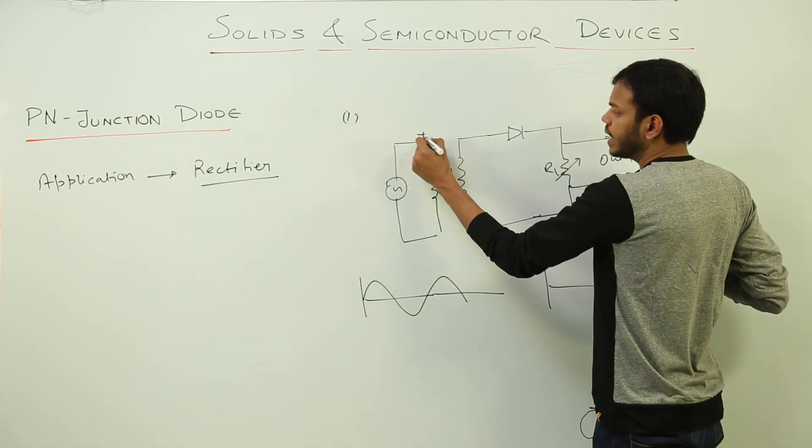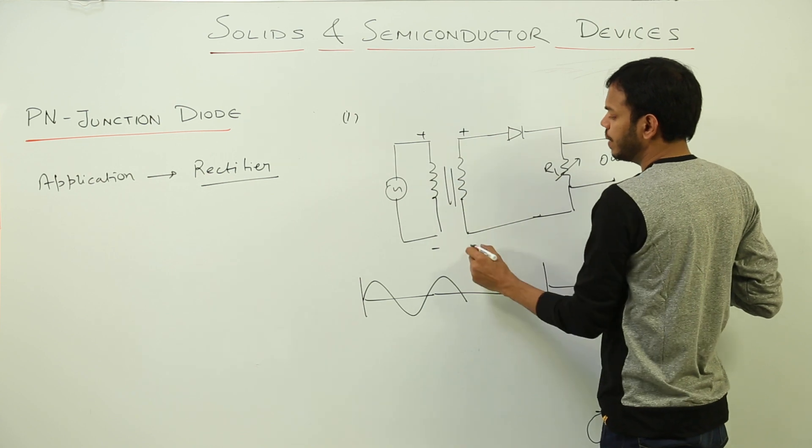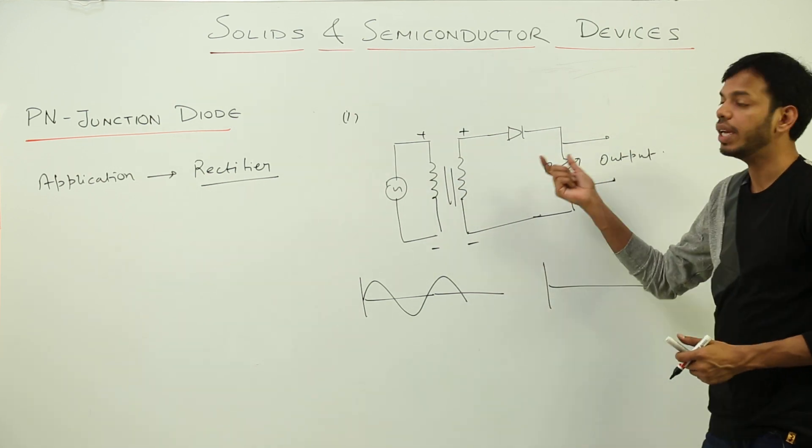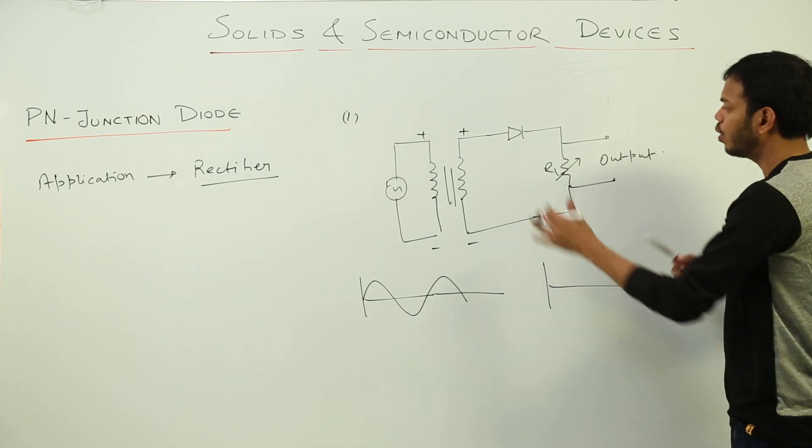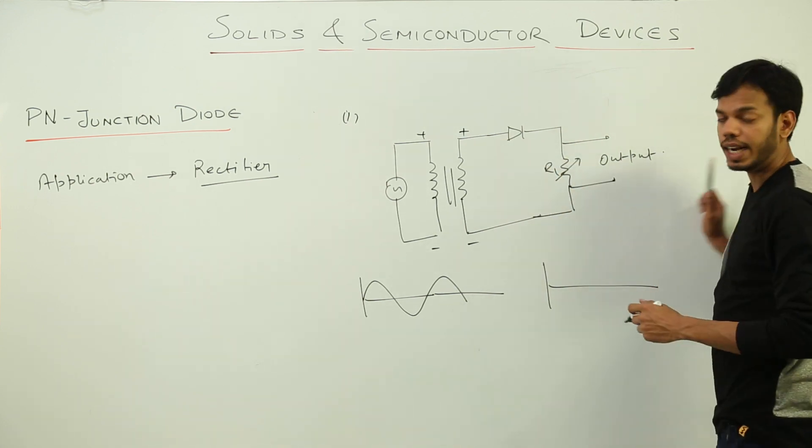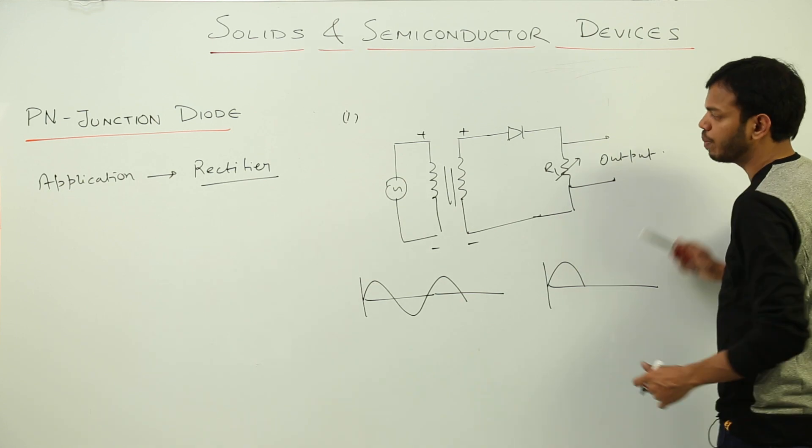When the when this thing is positive, this thing is negative. This remains positive, this remains negative. So what will happen? The diode will be in forward bias state and diode will conduct. So there will be flow of current and the output will be obtained as there was input.